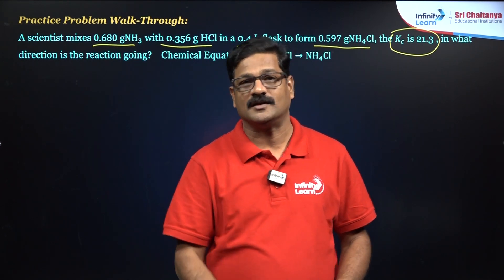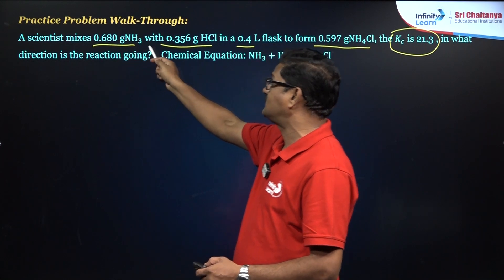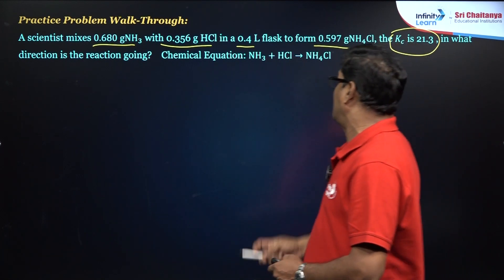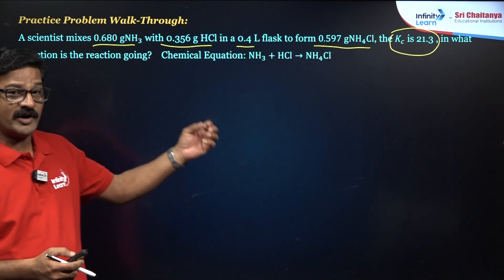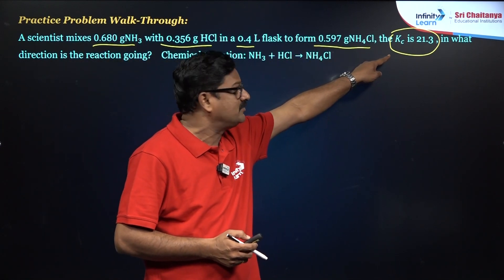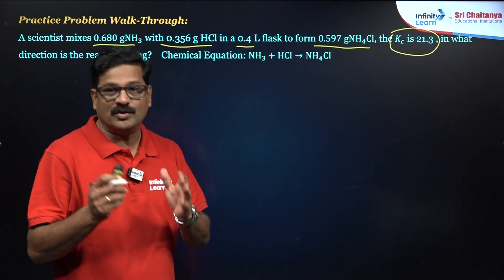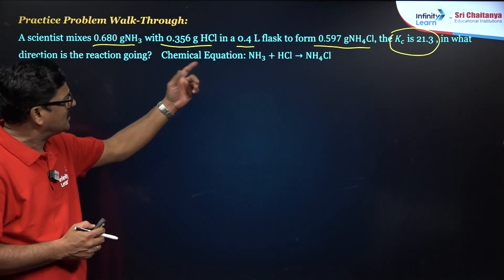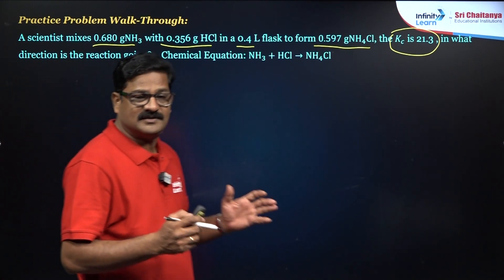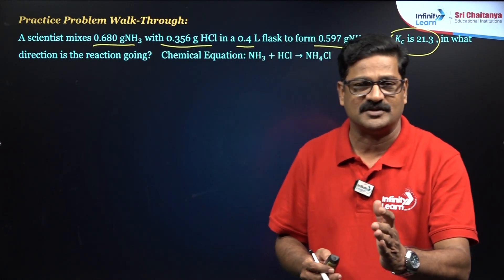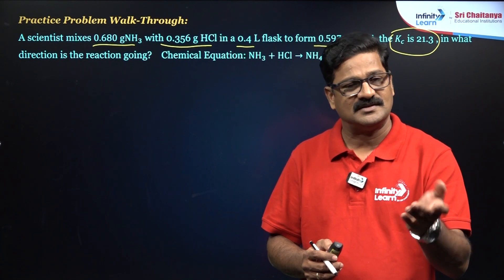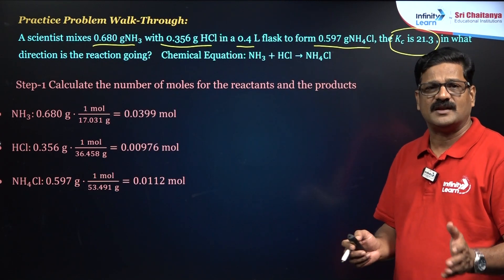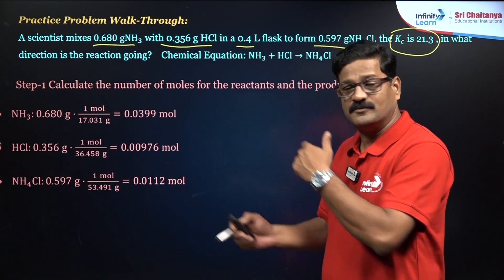Let's recap the numerical: a scientist mixes 0.680 g of ammonia with 0.356 g of HCl in a 0.4-liter flask to form 0.590 g of ammonium chloride. The equilibrium constant KC is 21.3. The question asks for the direction of the reaction. The reaction is: NH₃ + HCl ⇌ NH₄Cl. To solve such numericals — which are very common in NEET — first calculate QC, then compare with KC.